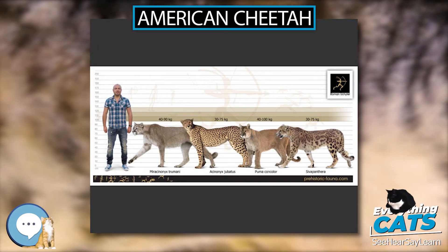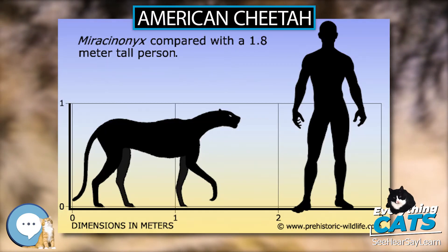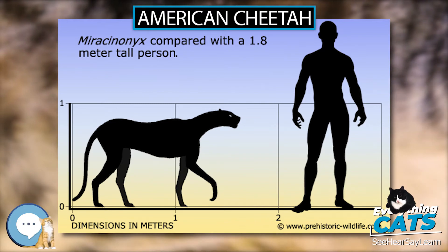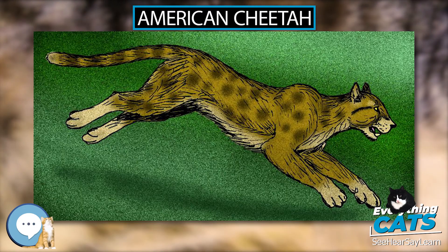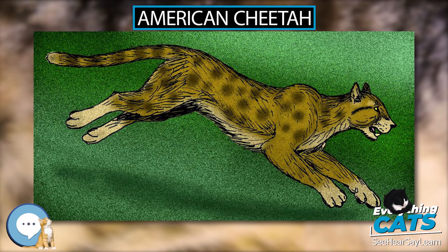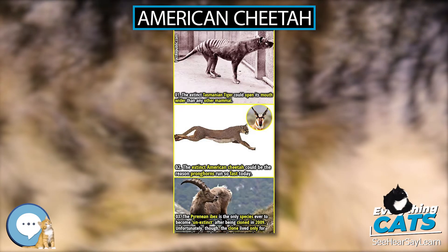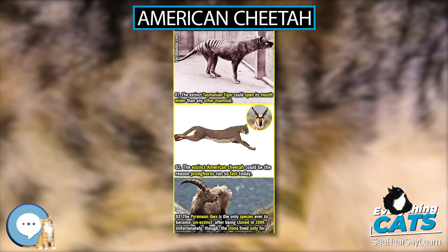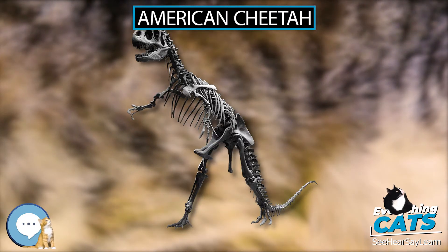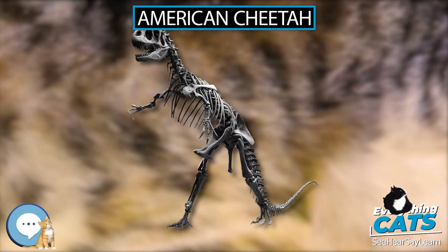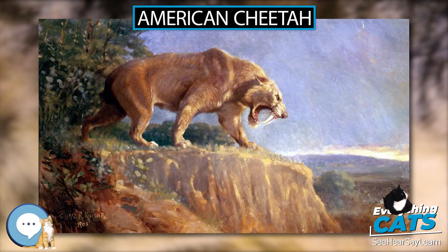Research into the American cheetah has been contradictory. It was originally believed to be an early cougar representative, before being reclassified in the 1970s as a close relative of the cheetah. This suggested that the ancestors of the cheetah diverged from the Puma lineage in the Americas and migrated back to the Old World, a claim repeated as recently as 2006 by Johnson et al., and in 2015 by Dobrin et al.